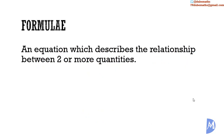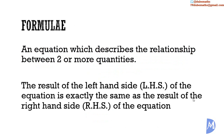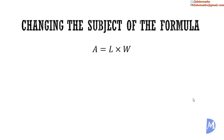A formula is an equation which describes the relationship between two or more quantities. The result of the left-hand side of the equation is exactly the same as the right-hand side. As I alluded to in the introductory video on algebra, understanding how to change the subject of the formula is a foundational skill of mathematics. The formula for area A of a rectangle is length L multiplied by width W: A is equal to L multiplied by W. A is referred to as the subject of the formula — it is usually written by itself on the left-hand side.